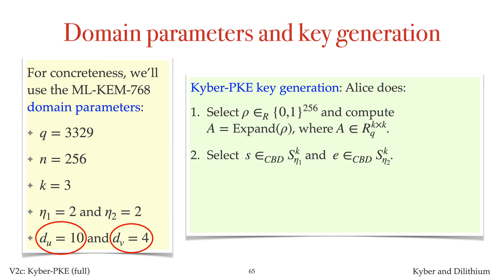Select random vectors of small polynomials S and E by selecting each coefficient according to the central binomial distribution. Then compute the vector T equals AS plus E. Alice's encryption key is comprised of ρ and T. Her decryption key is S.